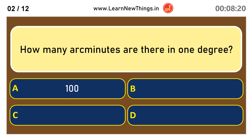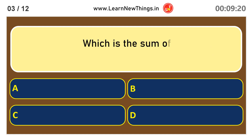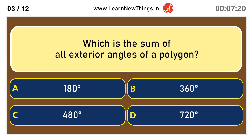How many arc minutes are there in one degree? 60. Which is the sum of all exterior angles of a polygon? 360 degrees.